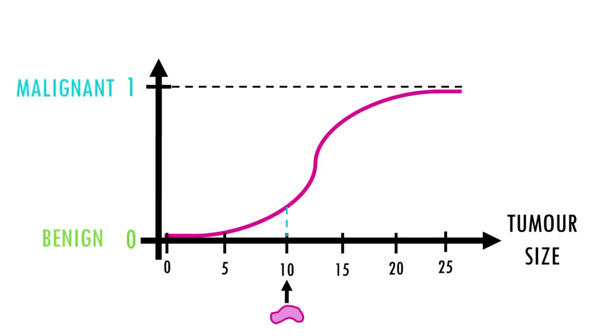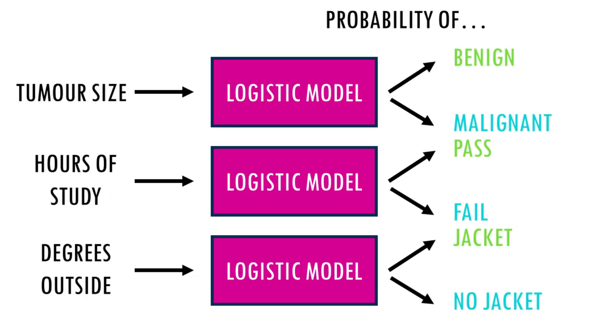So if we have a size of 10, the probability of the tumor being malignant is 0.35. So it's probably benign, according to our model at least.